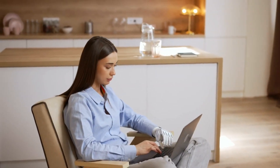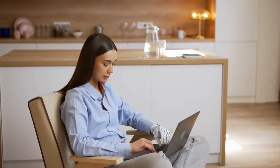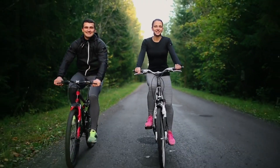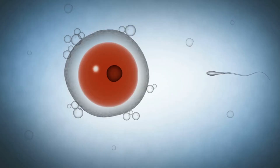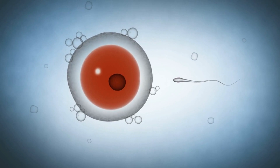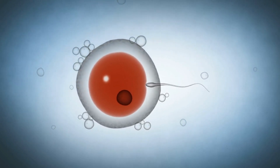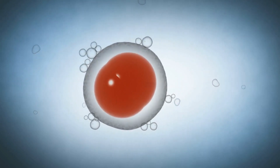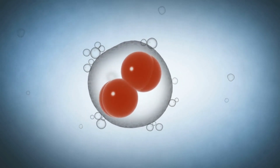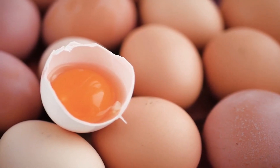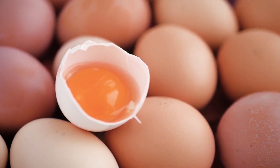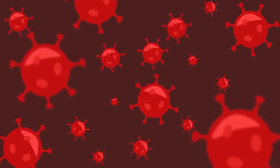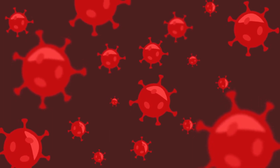Functional cysts are the most common type of ovarian cysts and are typically benign. They form as a result of the normal functioning of the menstrual cycle and include two subtypes. Follicular cysts occur when a follicle fails to rupture and release an egg during ovulation, causing it to continue growing into a cyst. Corpus luteum cysts form when the follicle releases an egg but does not fully dissolve; instead, it seals off and fills with fluid, becoming a cyst.